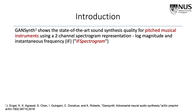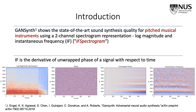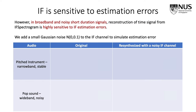Instantaneous frequency is the derivative of the unwrapped phase of a signal with respect to time. Estimation of IF provides comprehensive information about the phase of the signal when the audio has clearly separated frequency components. Thus, IF spectrogram estimation results in high-quality reconstruction of the time signal for pitched sounds such as musical instruments. However, in broadband and noisy short-duration signals, reconstruction of the time domain signal from IF spectrogram is highly sensitive to IF estimation errors, because the frequency components in such noisy signals are overlapping and not well-separated.